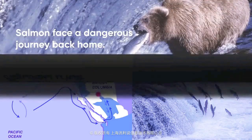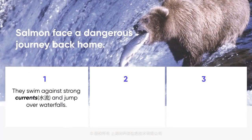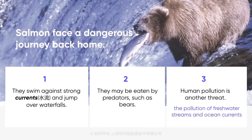What we do know is that salmon face a dangerous journey back home. They swim against strong currents and jump over waterfalls. They may be eaten by predators such as bears. During a salmon run, many salmon will die. Human pollution is another threat. On the west coast of the United States, the pollution of freshwater streams and ocean currents have hurt salmon runs. Of the tens of millions of salmon that once migrated rivers on the west coast, only 0.1% still do. Yet despite these obstacles, enough salmon will return home to breed the next generation.